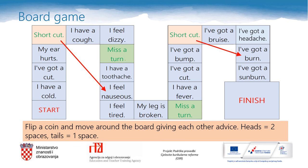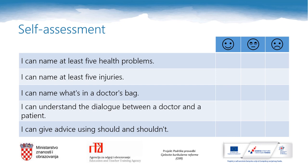For the end of today's lesson, I have a board game for you. You will flip a coin and move around the board giving each other advice — heads means you move two spaces and tails only one. You can play online with your classmates or try it with your siblings. Now it's time to check your progress: if you can do all of these things, tick the first face; if you're almost there, tick the second; and if you still need to work on it, tick the last one. I can name at least five health problems, five injuries, what's in a doctor's bag, understand a dialogue between a doctor and a patient, and give advice using 'should' and 'shouldn't.'